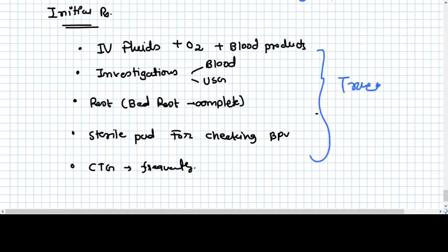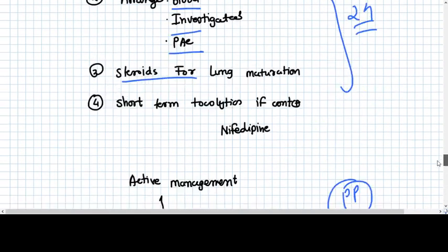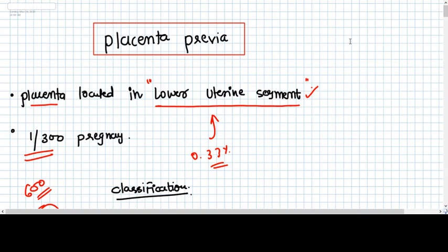And tranexamic acid is used for preventing bleeding PV. So this was all about placenta previa. Thank you.